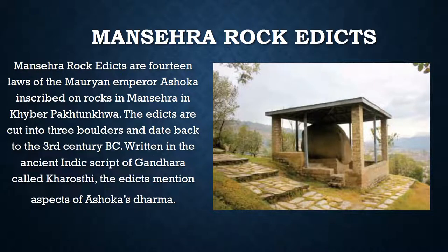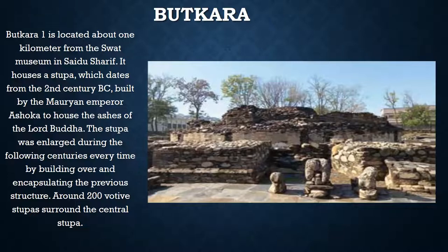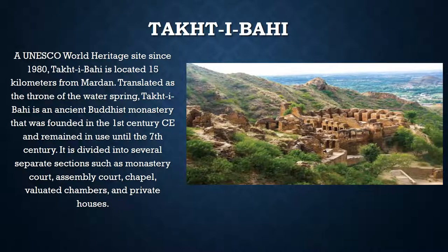In Swat, Shingardar Stupa is one of the largest in India and Pakistan, comparable to Mankiala Stupa in Rawalpindi, and it is very well preserved. Butkara in Swat's Saidu Sharif was built by Ashoka to house the ashes of the Lord Buddha — a very sacred site built over many times. Takht-i-Bahi is one of the world-renowned sites on the World Heritage List since 1980. It is a Buddhist monastery founded in the 1st century CE and remained in use till the 7th century, divided into several separate sections including monasteries, assembly courts, and chapels.